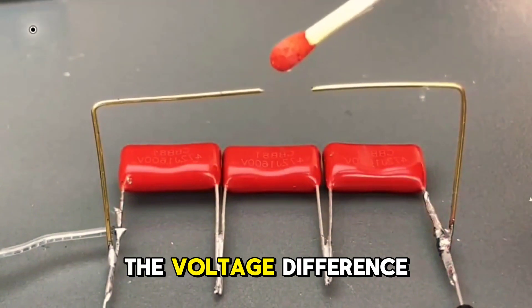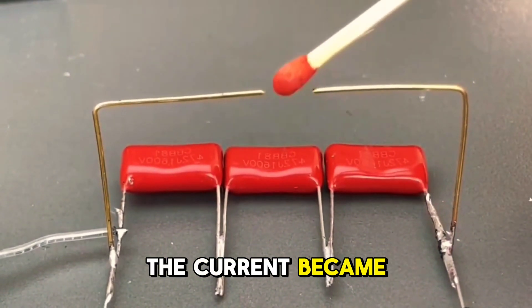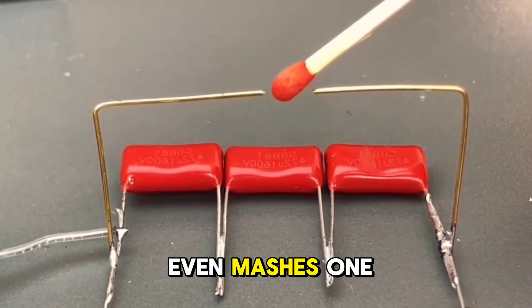Although the voltage difference did not reach 10,000 times, the current became very small. Now even matches won't light.